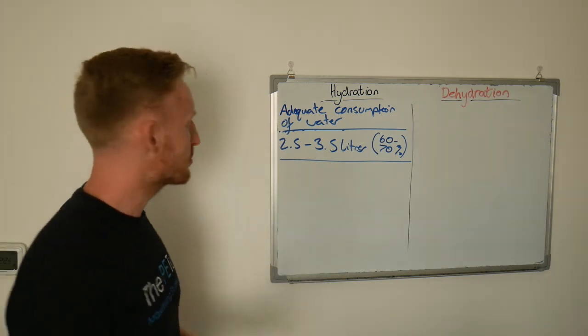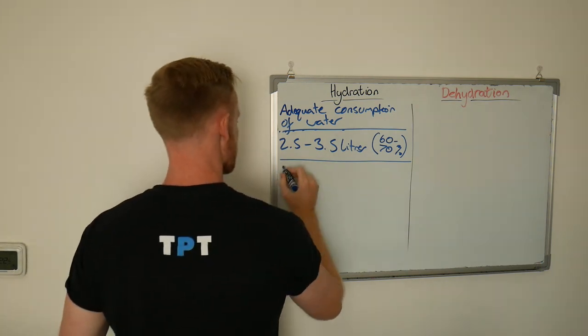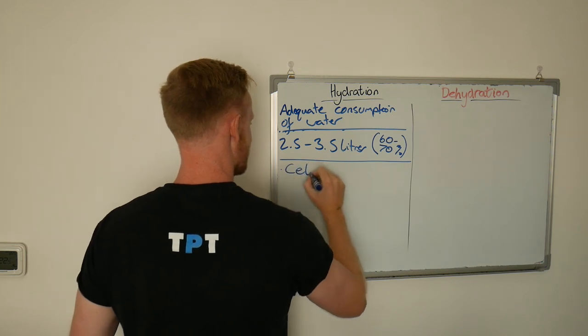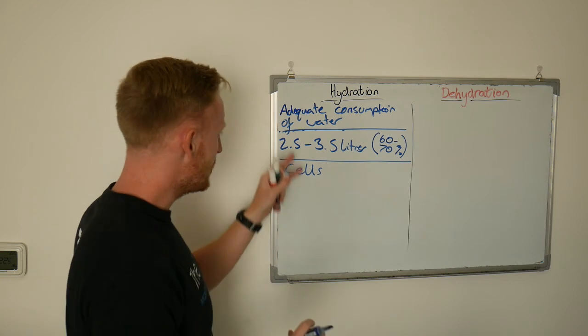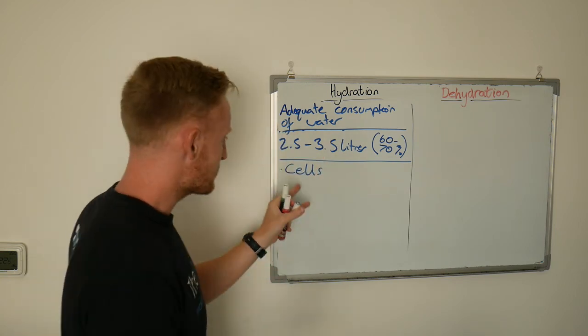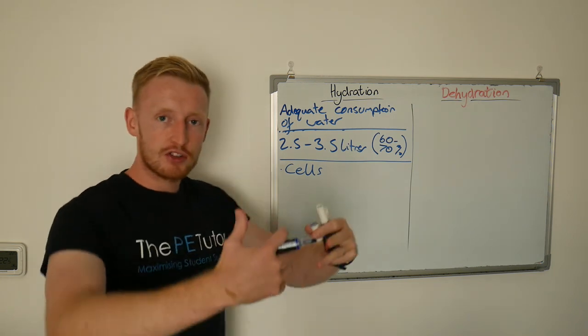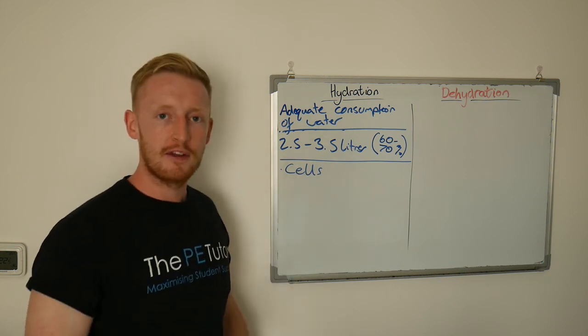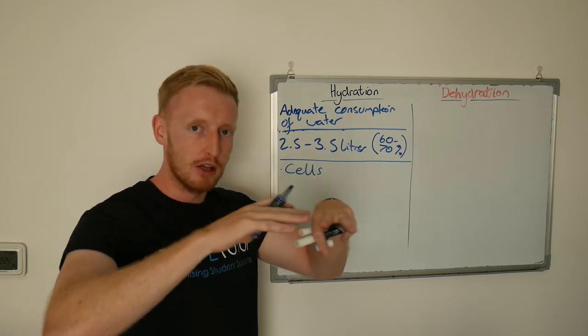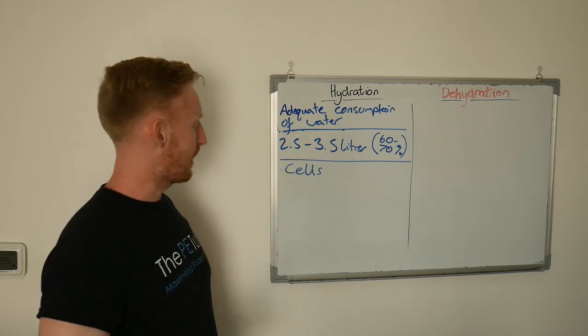Well it serves many important roles. The first is it makes up our cells. A lot of our cell space is actually water-based. So it's the site for chemical reactions to actually take place. If we start to dehydrate and lose water, and our cells lose water, then there's less space and less medium in which the chemical reactions and processes can actually take place.